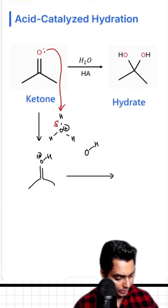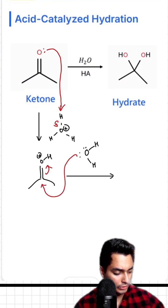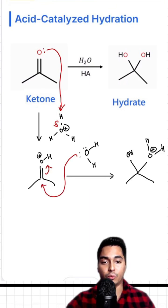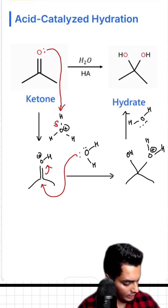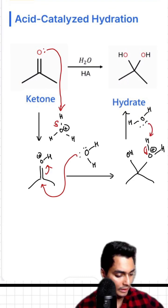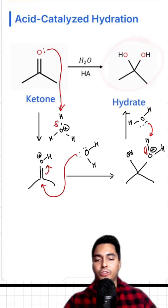Water that we just generated is going to come down here and attack the bottom side of this carbonyl, thereby pushing this double bond upwards. So now we have an OH and a water group that we're going to deprotonate once more with our water. Deprotonate one of these protons and we create our final product, which again is the hydrate.